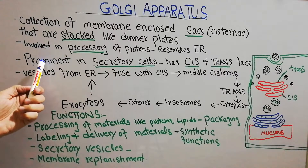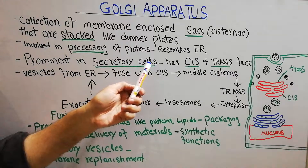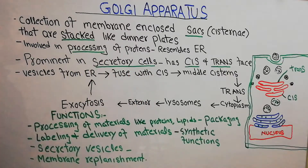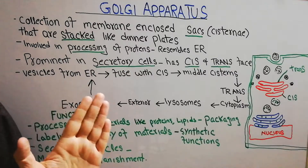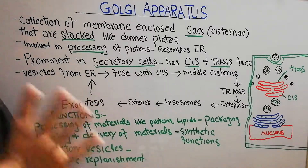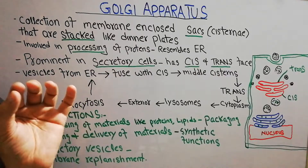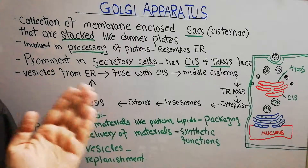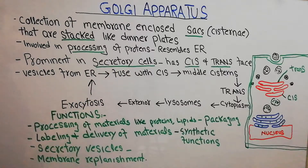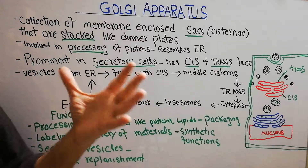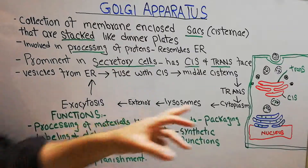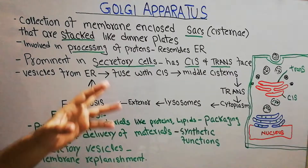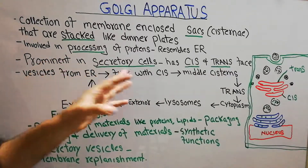Golgi apparatus is more prominent in secretory cells. Not all cells have a large amount of Golgi apparatus. It is present in most mammalian cells but is more prominent in those cells that secrete a lot of enzymes — for example in the pancreas or liver, and in organs that secrete hormones. Golgi apparatus is more active in those secretory cells.